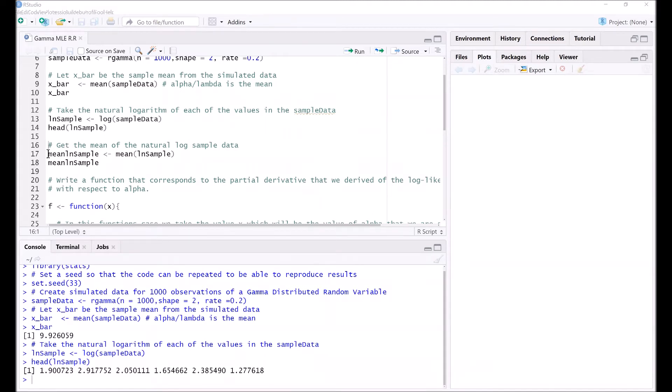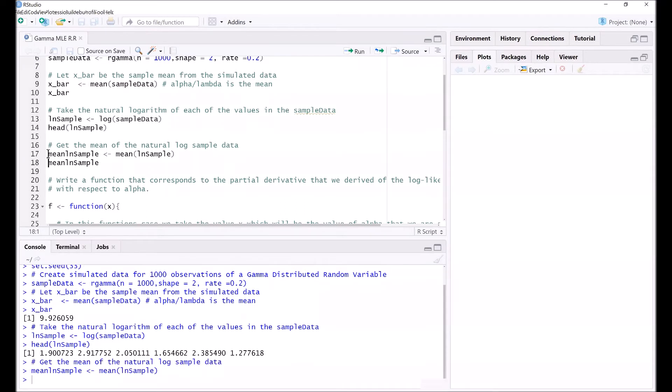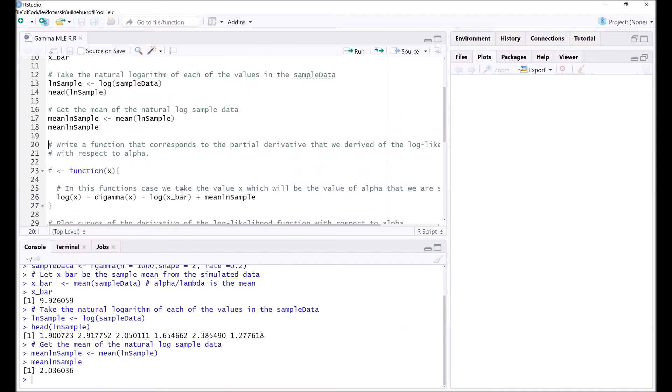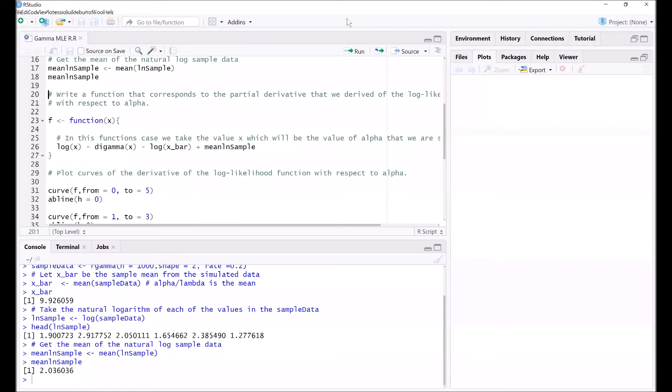After we have taken the natural logarithm of the sample data, we need to get the mean of those natural logarithms, and that value is 2.036. Now the next thing we need to do is define a function f. This function corresponds exactly to the function that we derived for the partial derivative of the log likelihood function with respect to alpha. So this is ln of alpha hat minus the digamma function of alpha hat, subtracted by the natural logarithm of x-bar, and we add the mean of the natural logarithm of x. We need to find where that function intersects with the x-axis or where this function is equal to zero.